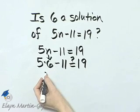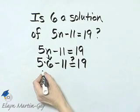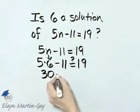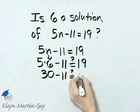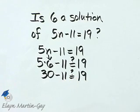What is 5 times 6? 5 times 6 is 30, minus 11, is that 19? What is 30 minus 11? That is 19.